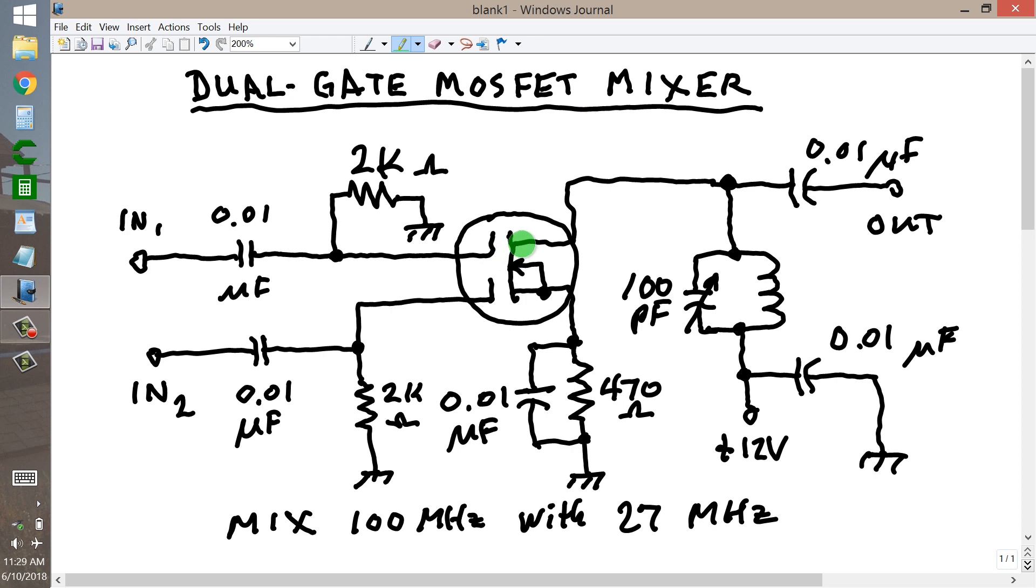Now, a dual-gate MOSFET is characterized by extremely high, essentially infinite, input impedance, and virtually no coupling between the gates, which are these electrodes here, and the drain or source, which are those electrodes, this one, drain, that one, source, respectively.